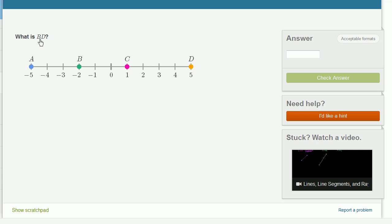What is BD? So when they're just saying BD, they're saying literally the length of segment BD. They're saying the length from point B to point D. B is sitting here at negative 2. D here is at 5. So you're looking at really the distance between negative 2 and 5.